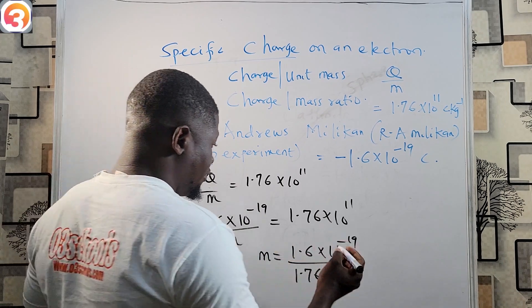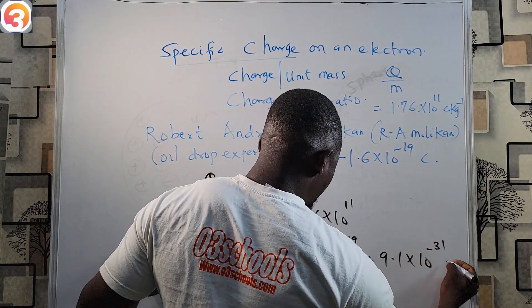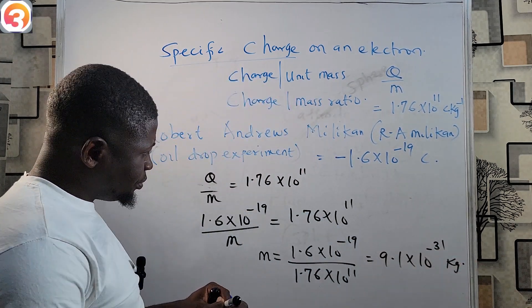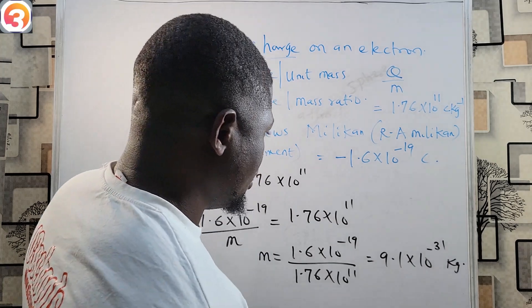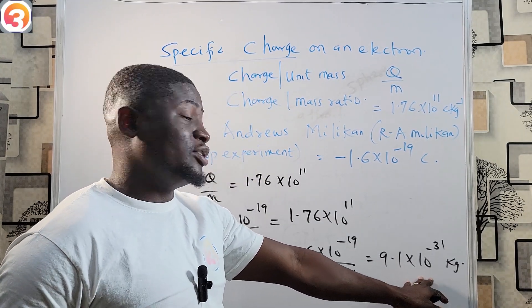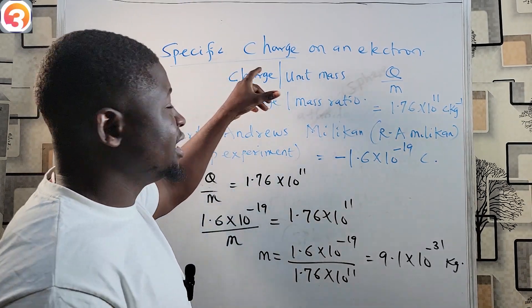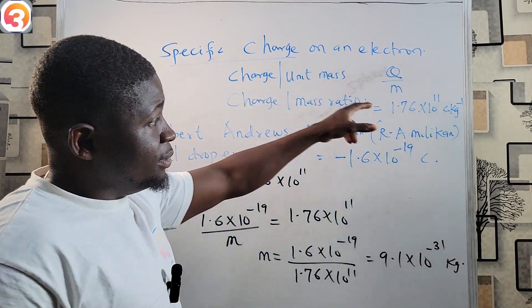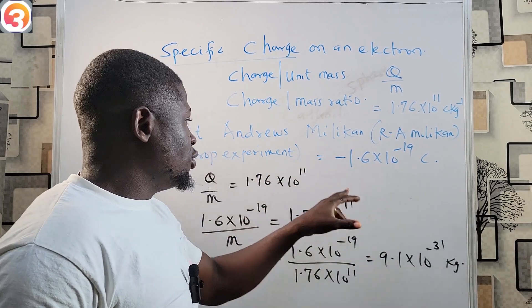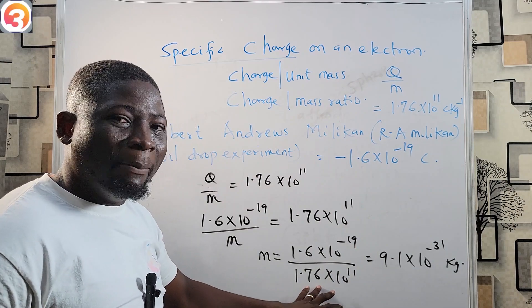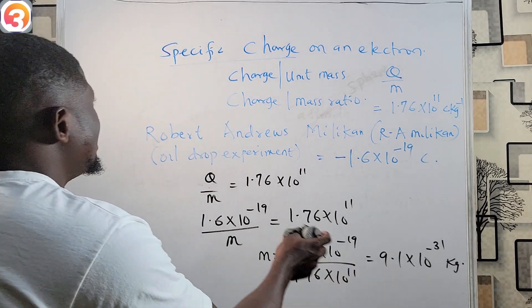Doing this calculation, the value comes out to be 9.1 × 10⁻³¹ kilograms. The coulombs cancel, leaving just kilograms. So the mass of an electron is 9.1 × 10⁻³¹ kg — derived from the specific charge determined by JJ Thompson and the charge on an electron discovered by Robert Andrews Millikan.